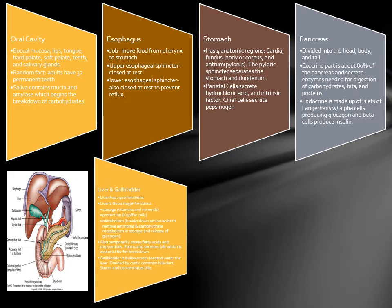The liver has more than 400 functions. Its three major functions are storage of vitamins and minerals, protection, and metabolism — which includes breaking down amino acids to remove ammonia, carbohydrate metabolism, and storage and release of glycogen. It also temporarily stores fatty acids and triglycerides, and forms and secretes bile, which is essential for fat breakdown. The gallbladder is a bulbous sac located under the liver, drained by the cystic common bile duct, and stores and concentrates bile.